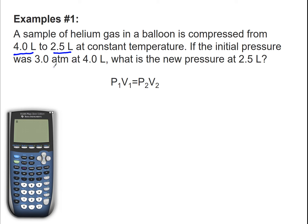If the initial pressure was 3.0 atm at 4 liters, what is the new pressure at 2.5 liters? So here's Boyle's Law expression: P1 times V1 equals P2 times V2.